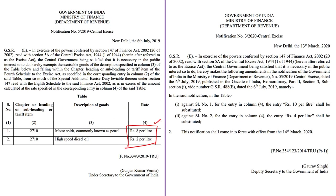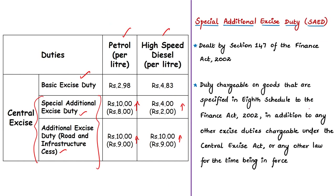The Department of Revenue under the Ministry of Finance issued a notification on 13th March where the special additional excise duty has been increased by 2 rupees for both petrol and diesel. Similarly, the road and infrastructure cess has also been increased by 1 rupee — before it was 9 rupees, now it is 10 rupees. This is how excise duty has been hiked for both petrol and high-speed diesel.